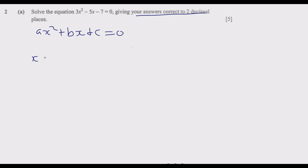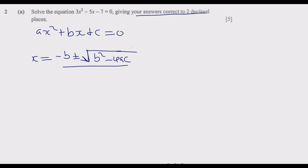The quadratic formula is: x equals negative b, plus or minus the square root of b² minus 4ac, all over 2a. It is just a matter of identifying which value is a, which is b, and which is c. From our equation, a equals 3, b equals negative 5, and c equals negative 7.